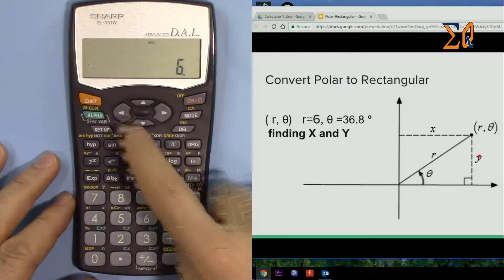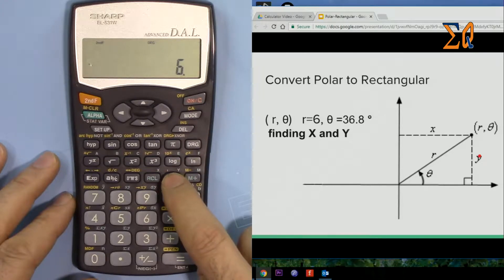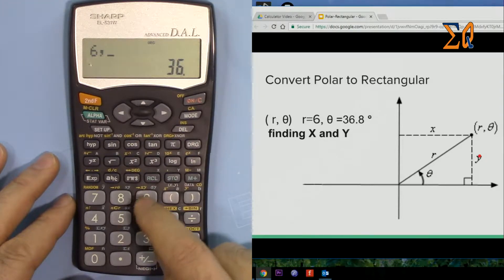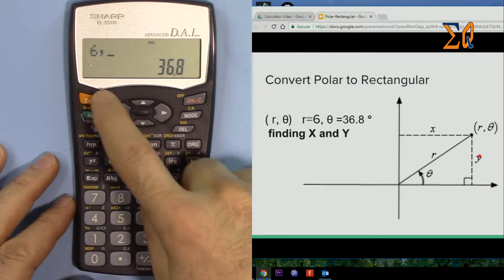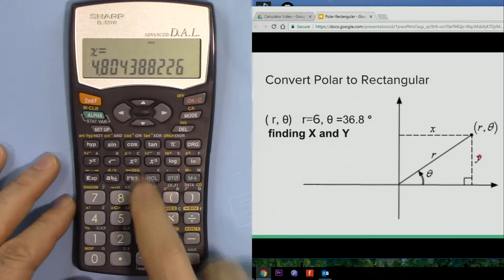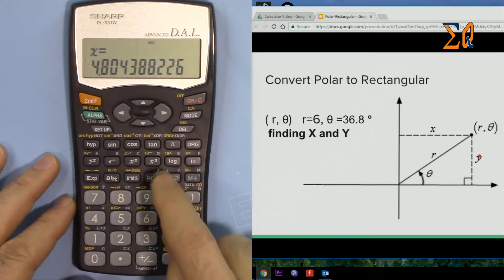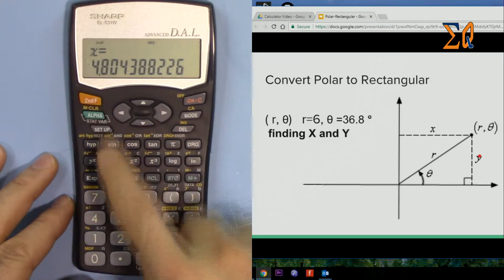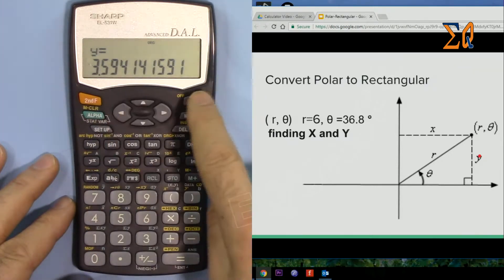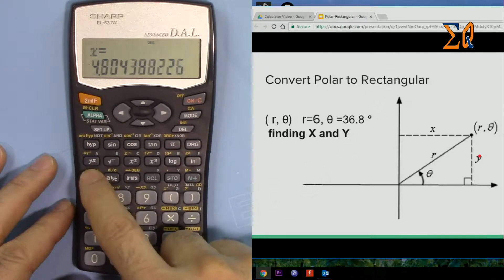Enter 6, second function and STO—this is a comma now—then 36.8. Now to get it in X and Y, second function, then this 9 with X and Y. So X is 4.8. To get the Y, second function and then EXP will give you the Y. If you need X again, just press this continuously to get the value.